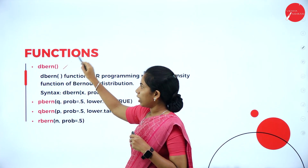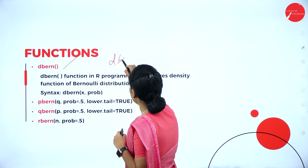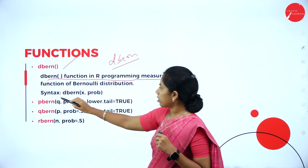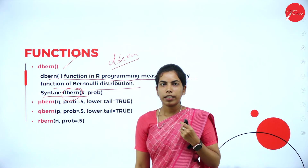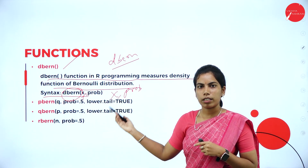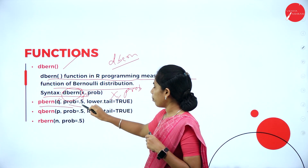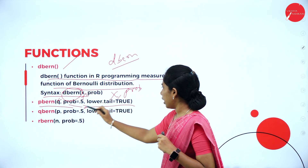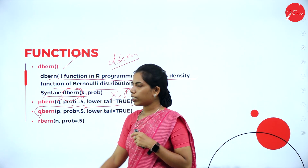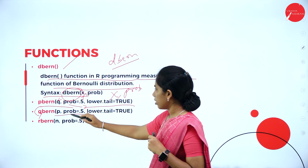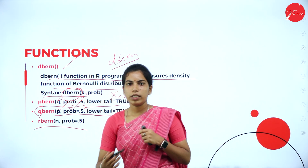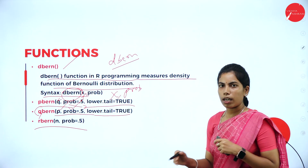Let's see the Bernoulli distribution functions one by one. The first is dBern — the d Bernoulli distribution function — which measures the density function of Bernoulli distribution. The syntax is dBern(x, probability). The second is pBern, with syntax pBern(x, probability, lower.tail=TRUE) — when lower.tail=TRUE, it also calculates the success rate. The third is qBern (quartile), with syntax qBern(p, probability, lower.tail=TRUE). The fourth is rBern, which generates random sequences of numbers using Bernoulli distribution.